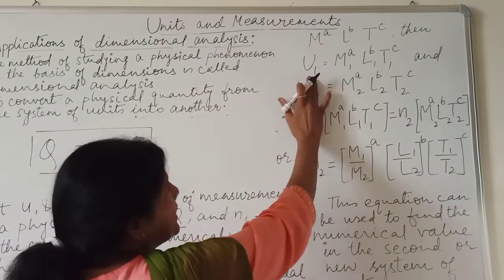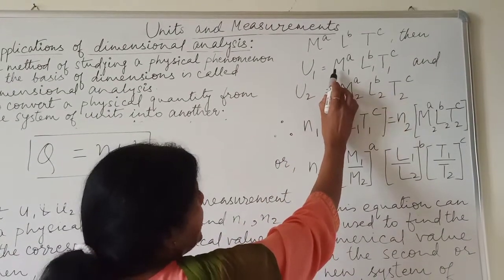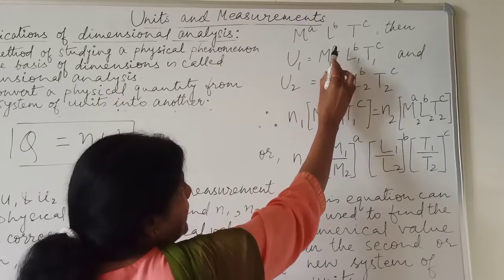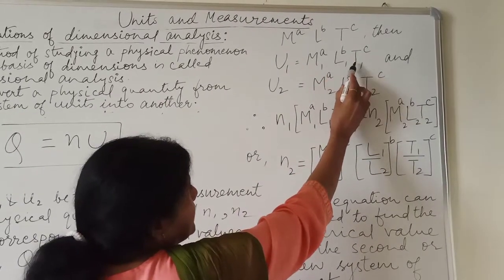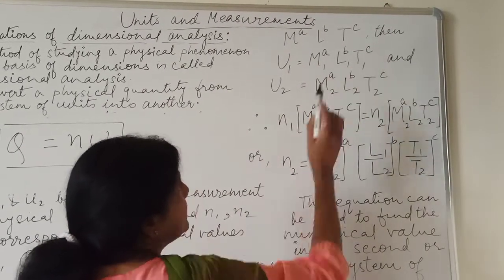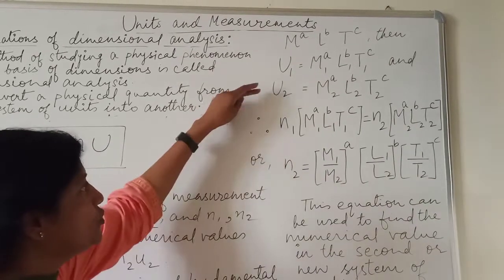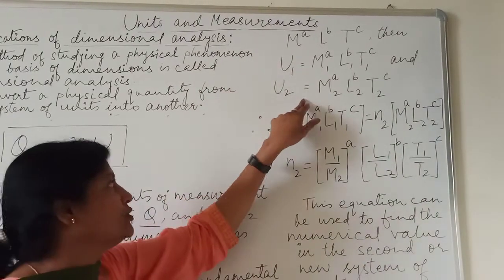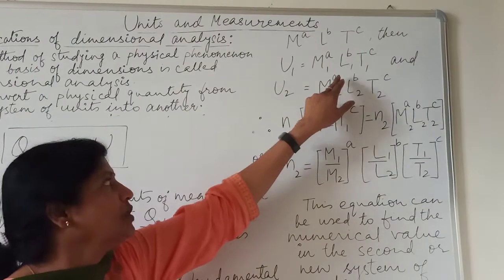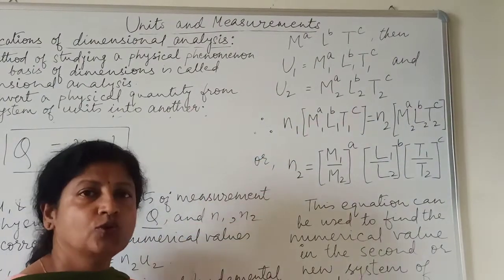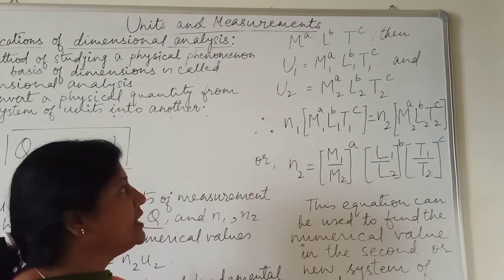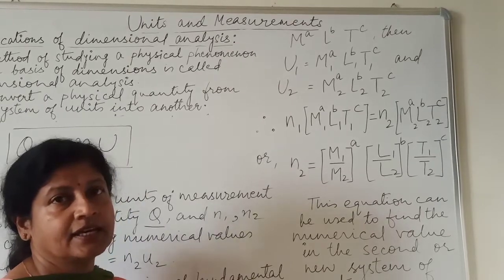Then, U₁ can be written as M₁^A L₁^B T₁^C and U₂ is equal to M₂^A L₂^B T₂^C.